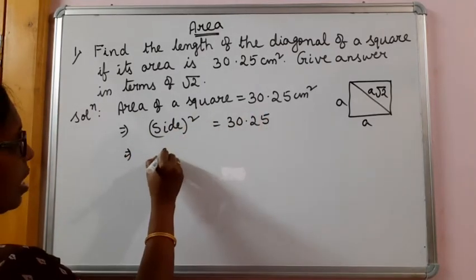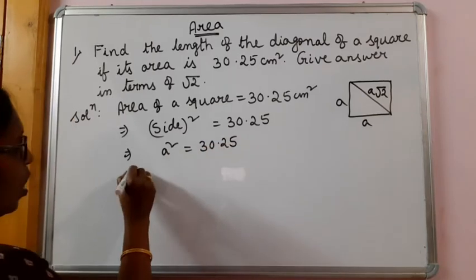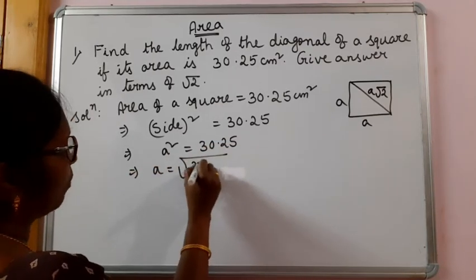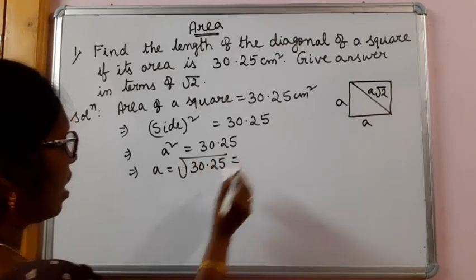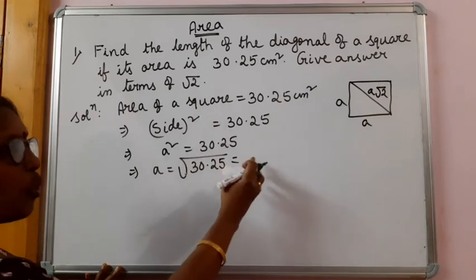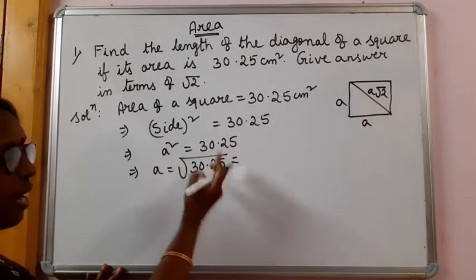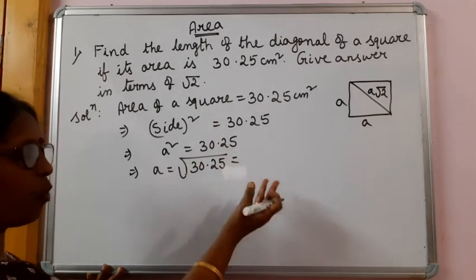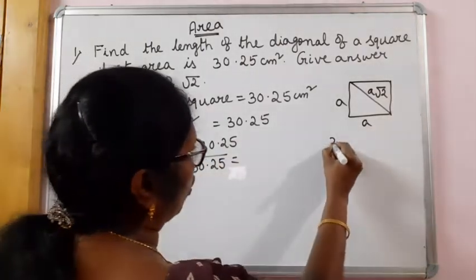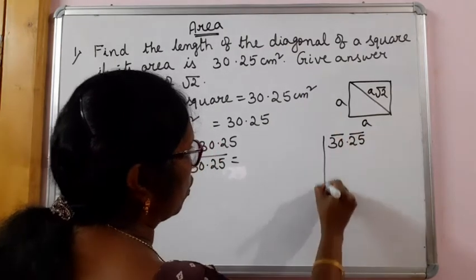We can write A squared is equal to 30.25 cm square. Taking square root of 30.25 — as we see the whole number is 30, we can surely get the whole number 5, and towards the right decimal part there is a 5, so one more 5 we are going to get. As we see, we should be able to know. If you cannot, you have to find the square root.